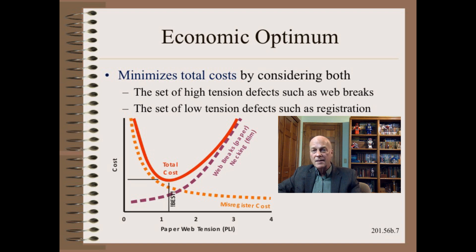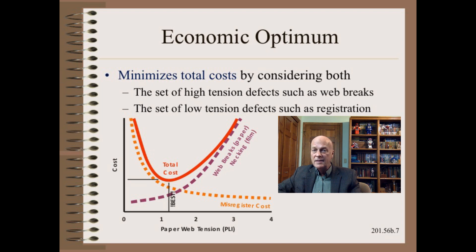Finally, you will ask: how do we get these cost curves? The answer is, if you feel the need to quantify the cost versus tension settings, you must do trials. However, as I write and teach, you may not have to. There are many simple ways to know when your tension setting is economically not optimum.